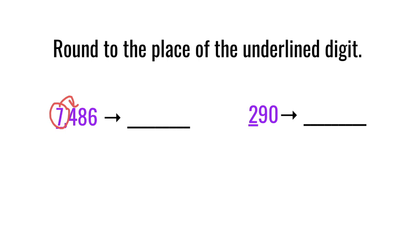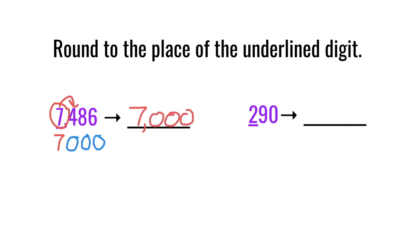The next door number is a four, which is four or less, so I say: four or less, let it rest. So that seven is going to stay a seven, and everything after the seven will become zeros — the four, the eight, and the six will become zeros. So 7,486 when rounded to the nearest thousand is 7,000.